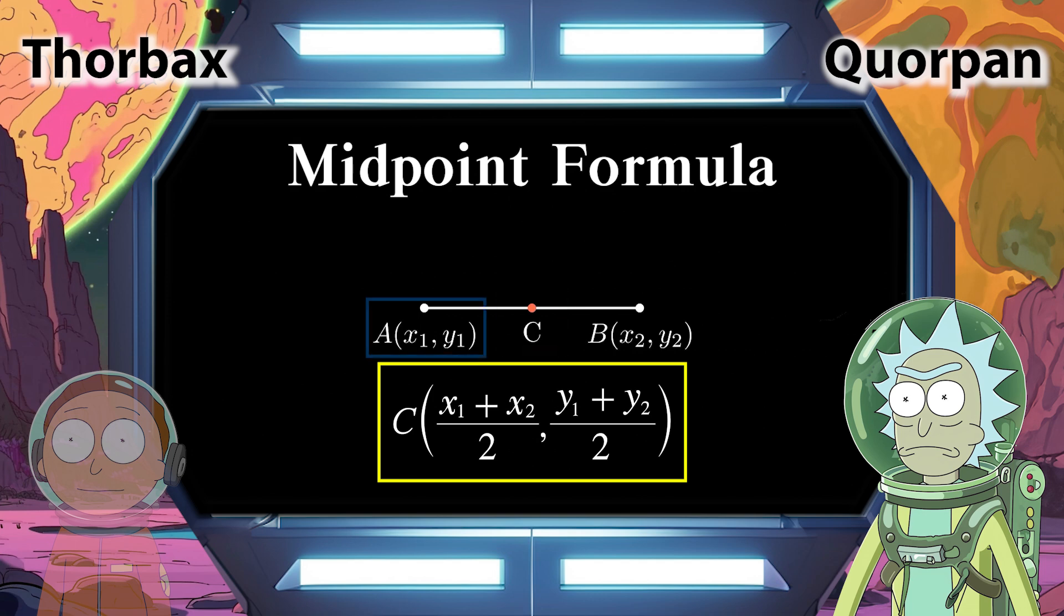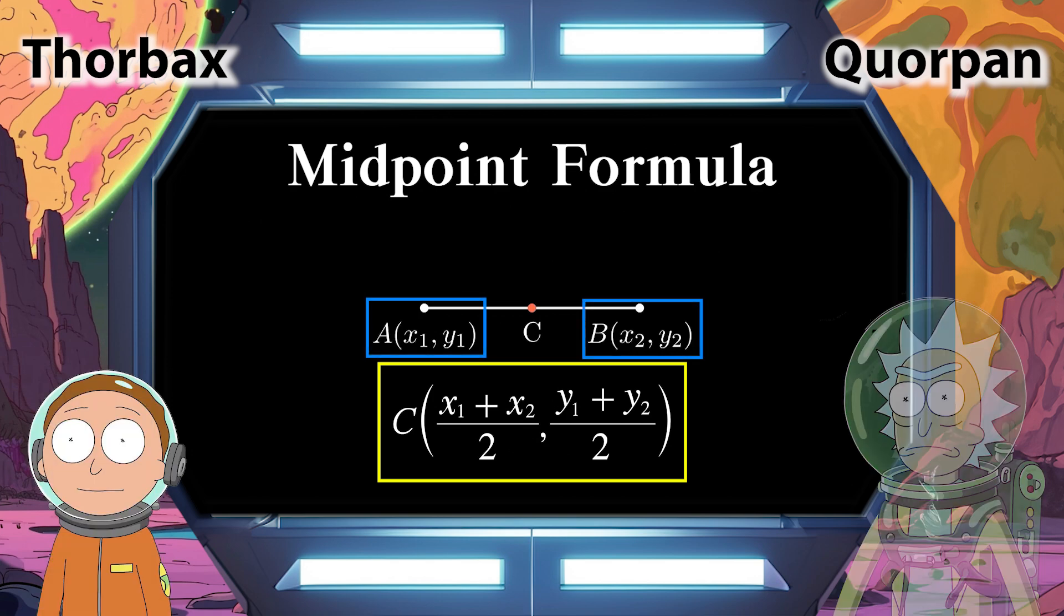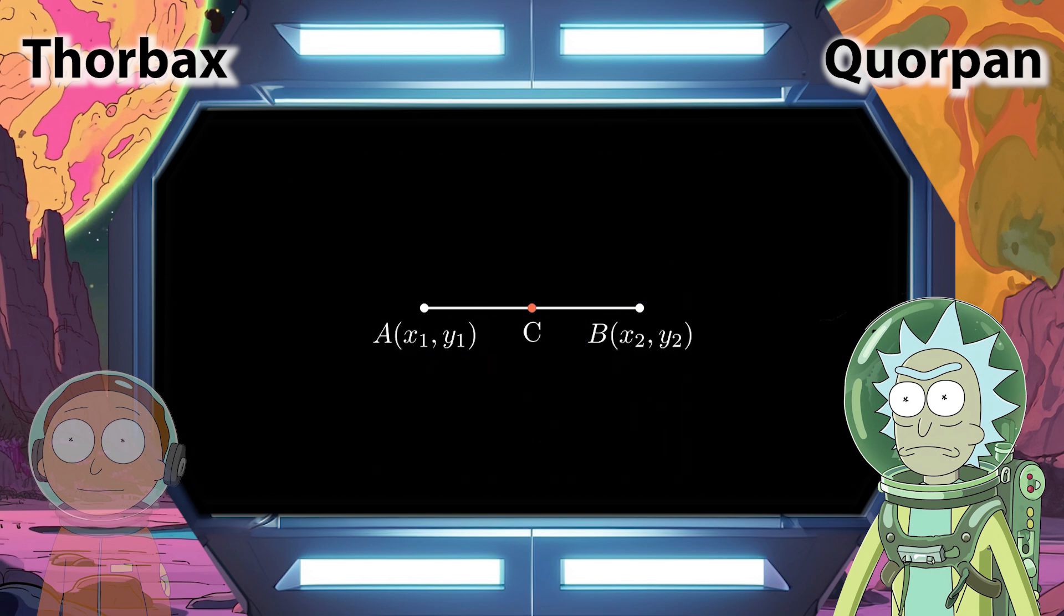All we need is two coordinate points X1 comma Y1 and X2 comma Y2. What coordinate points do we have? Well, if the planet Thorbacks represents one coordinate point, then X1 equals 1 and Y1 equals 2.